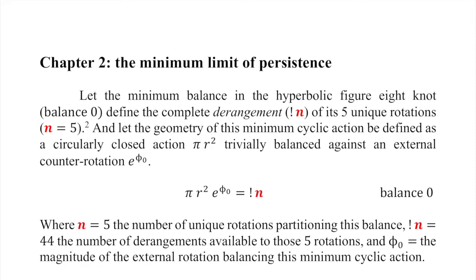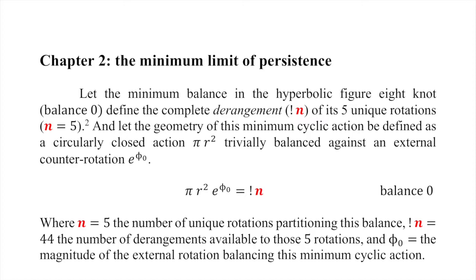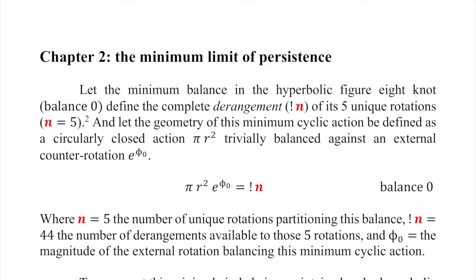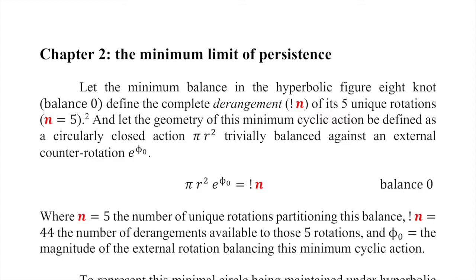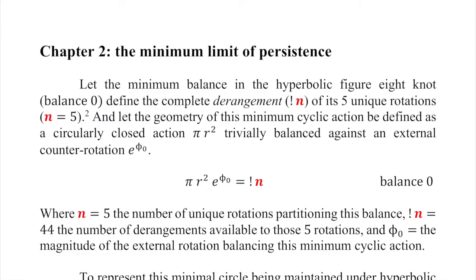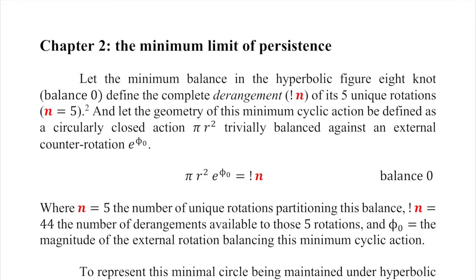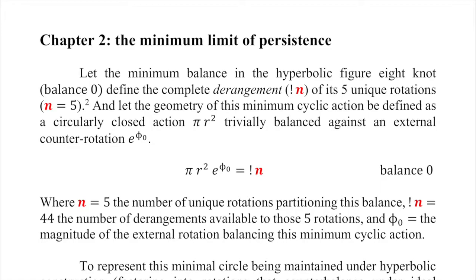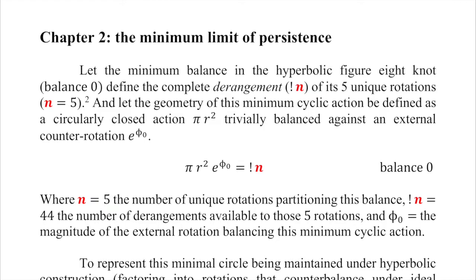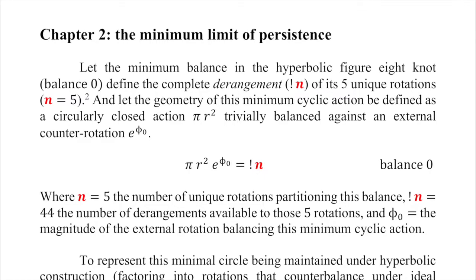Chapter 2: The Minimum Limit of Persistence. Let the minimum balance in the hyperbolic figure-eight knot — balance 0 — define the complete derangement of the five unique rotations. With n = 5, we let balance 0 be the definition of the derangements of those five things. We define the geometry of this minimum cyclic action as the minimum possible cyclic action — a circularly closed action, pi r squared, trivially balanced against an external counter-rotation. So the internal construction of this minimum balance is a circle: the simplest possible thing geometrically it could be.